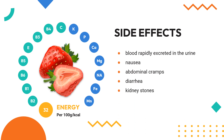Side effects: Vitamin C is a water-soluble vitamin, with dietary excesses not absorbed, and excesses in the blood rapidly excreted in the urine, so it exhibits remarkably low acute toxicity. Other symptoms reported for large doses include nausea, abdominal cramps, and diarrhea. These effects are attributed to the osmotic effect of unabsorbed vitamin C passing through the intestine. There is a long-standing belief among the mainstream medical community that vitamin C increases risk of kidney stones.